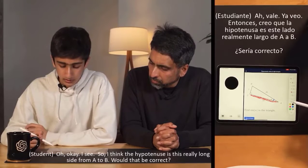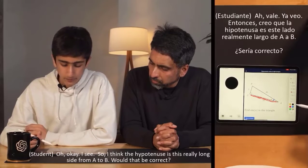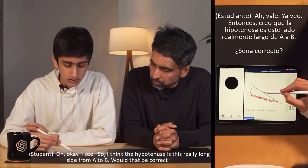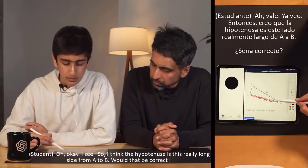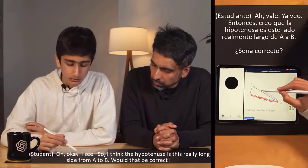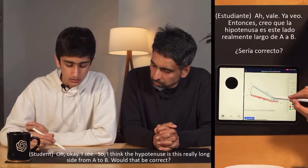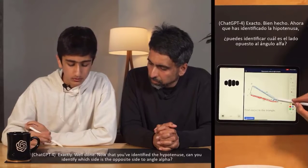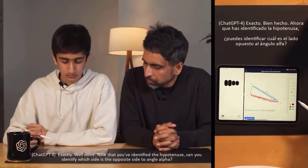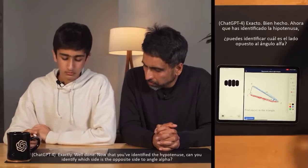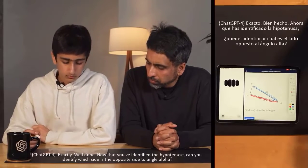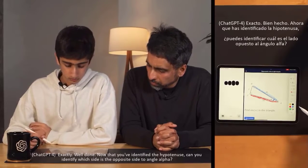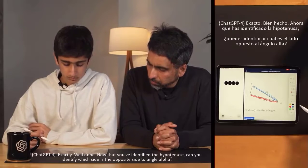I see. So I think the hypotenuse is this really long side from A to B. Would that be correct? Exactly, well done. Now that you've identified the hypotenuse, can you identify which side is the opposite side to angle alpha?